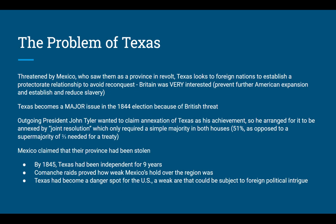Texas started to probe Britain and France to establish a protectorate relationship to avoid reconquest. Britain was very interested — they wanted to prevent further American expansion across North America, possibly into Central America, threatening British interests in the Caribbean and trade with Mexico. They also saw it as an opportunity to reduce slavery, since the British Empire had just abolished slavery. Texas became a major issue in the 1844 election, mainly because of this British threat — it had become a weak area, subject to foreign political intrigue.